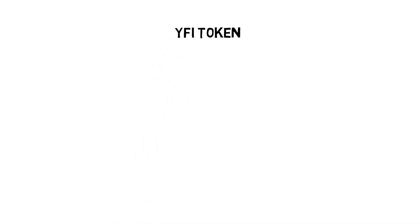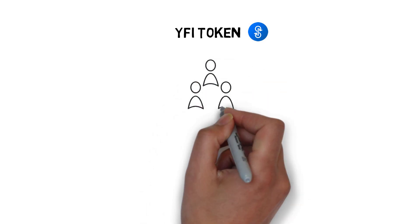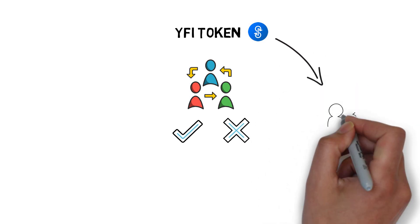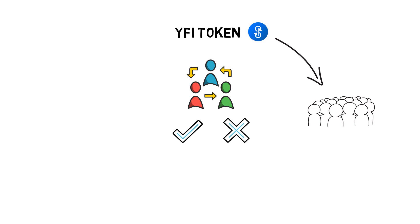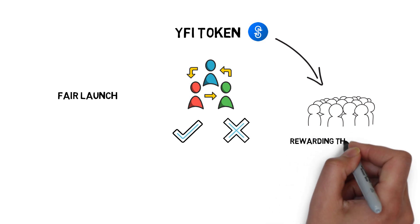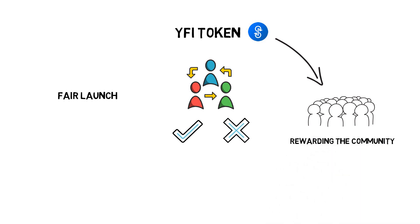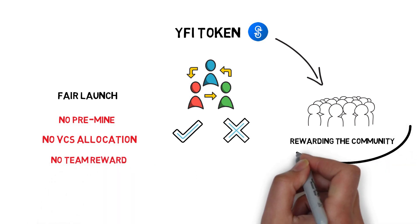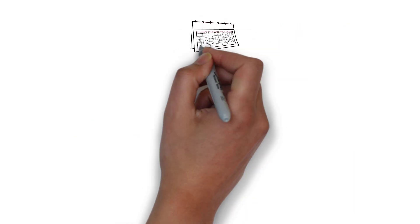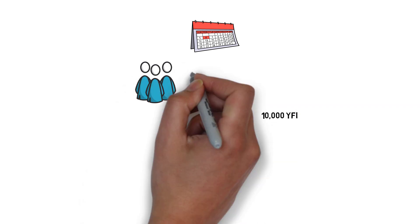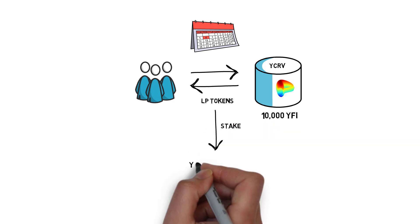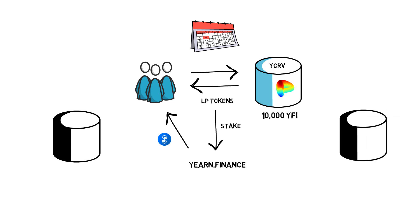Now let's talk about Yearn's token, YFI. To further decentralize the Yearn protocol and allow other people to make meaningful decisions on the future of the protocol, Andre decided to distribute a governance token to the Yearn community. The token distribution was focused on having a fair launch and rewarding the Yearn community. To ensure a fair launch, the YFI token had no pre-mine, no VC allocation, and even no team reward — all tokens were distributed to the users of the protocol. A 9-day-long token distribution started with allocating 10,000 YFI tokens to the liquidity providers of the yCRV pool, who had to stake their yCRV LP tokens to receive YFI rewards. Shortly after, two more Balancer pools were added with 10,000 tokens each, totaling 30,000 YFI tokens.